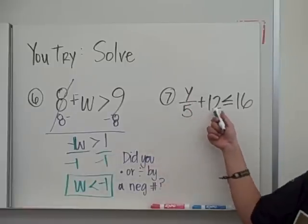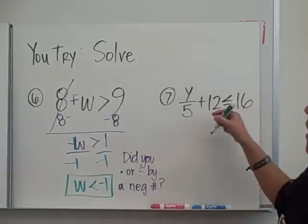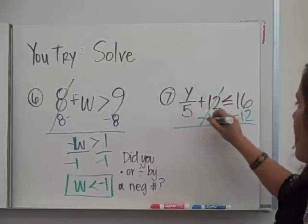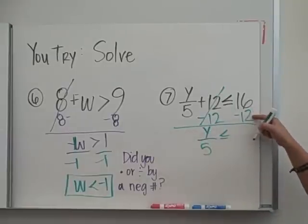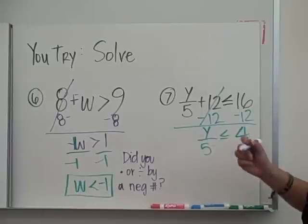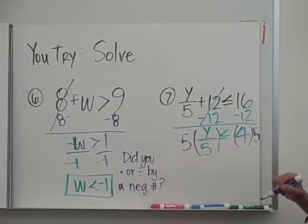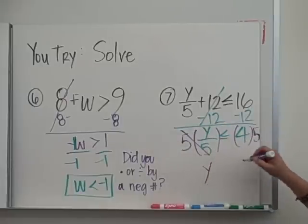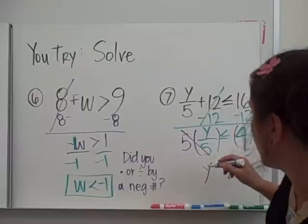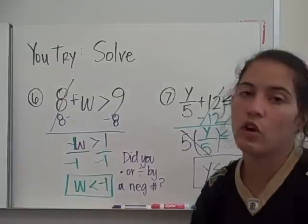Number 7 — y over 5 plus 12 is less than 16. There are no minuses in this one, and no negatives to start with, which is nice. I want to undo this addition with subtraction — I'm going to take 12 away from both sides. y over 5 is less than 4, since 16 minus 12 is 4. This is division, so I undo division with multiplication — multiply both sides by 5. 4 times 5 is 20. Did I multiply by a negative? No, I did not. So my inequality symbol remains the same. And that is how you solve two-step inequalities.